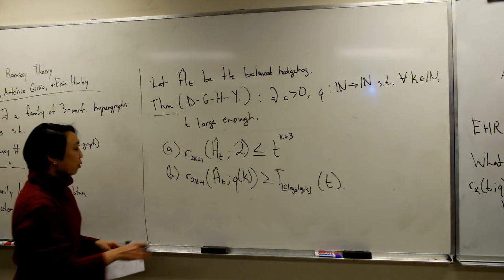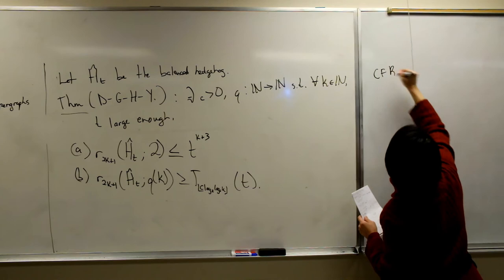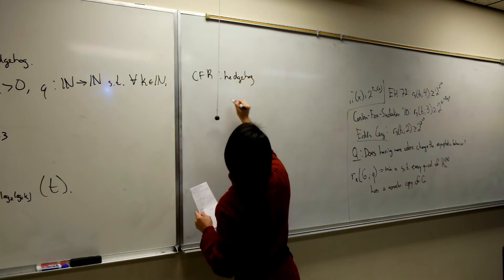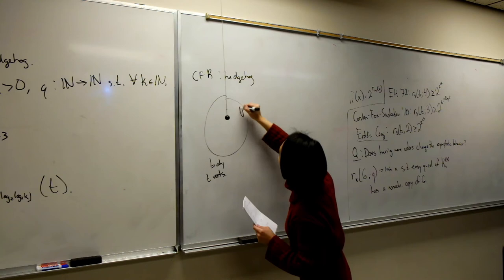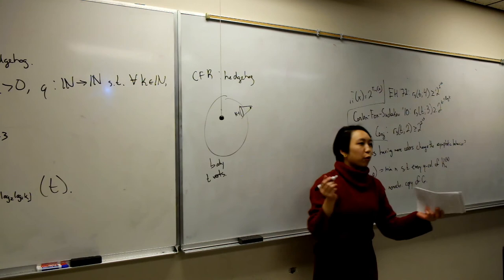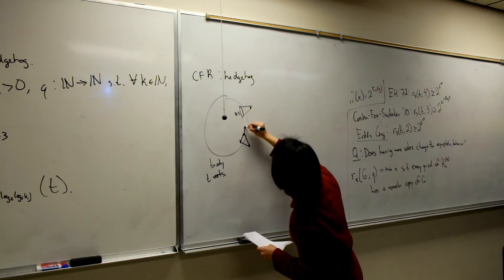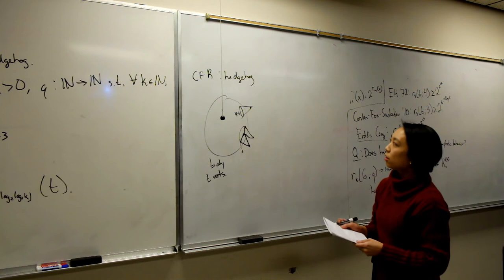Let me explain what hedgehogs are. In the Conlon-Fox-Sudakov paper, you take a body of T vertices, and for every set of size K−1, you add a unique vertex on the outside — the spine — to complete the edge. For the three-uniform case, you take pairs of vertices and add these extra spine vertices on the outside. You add a total of N choose 2 vertices in the three-uniform case.